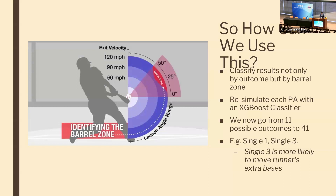Next, I re-ran every plate appearance with the machine learning classifier XGBoost, predicting the probability of each plate appearance outcome and using those results to create new player distributions.